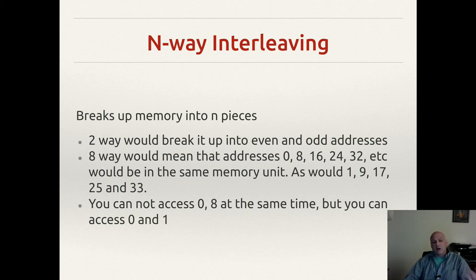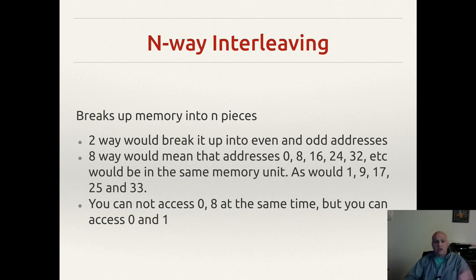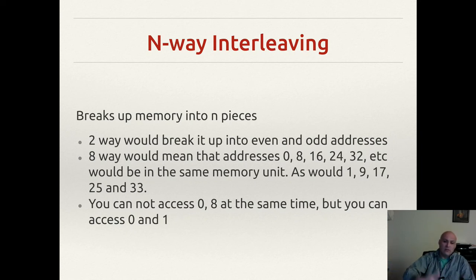An eight-way memory access would be at addresses 0, 8, 16, 24, 32, and so on — it stripes across the unit. Similarly, addresses 1, 9, 17, 25, and 33 would form another stripe. You keep going up by eight for each, increasing by eight as you go from chip to chip.